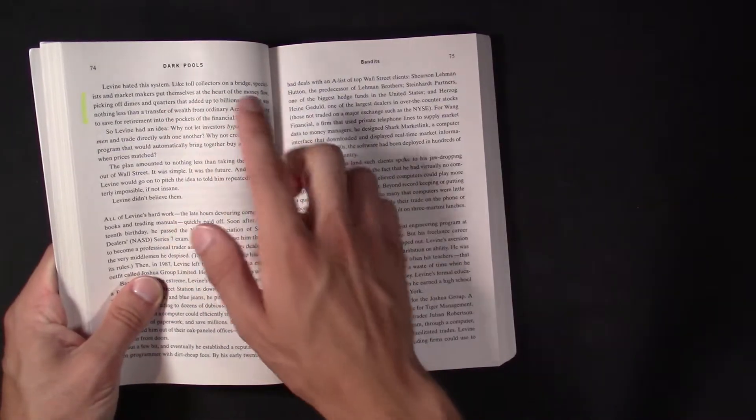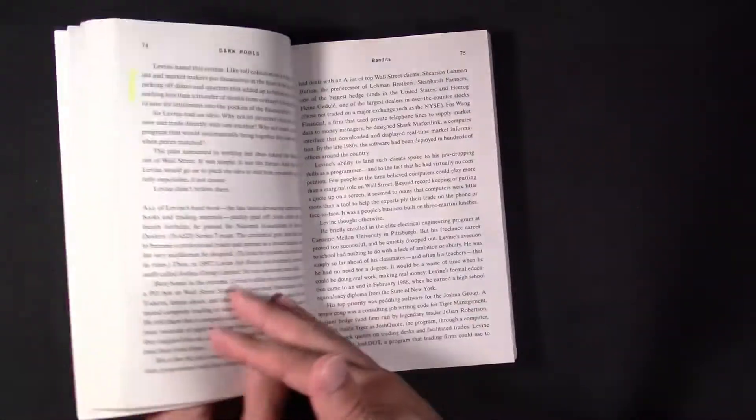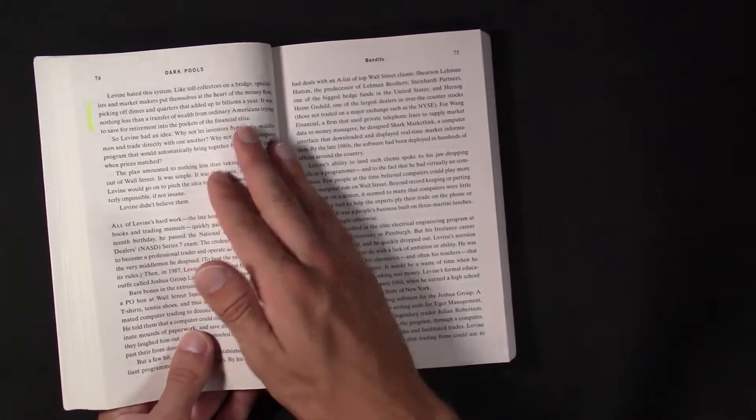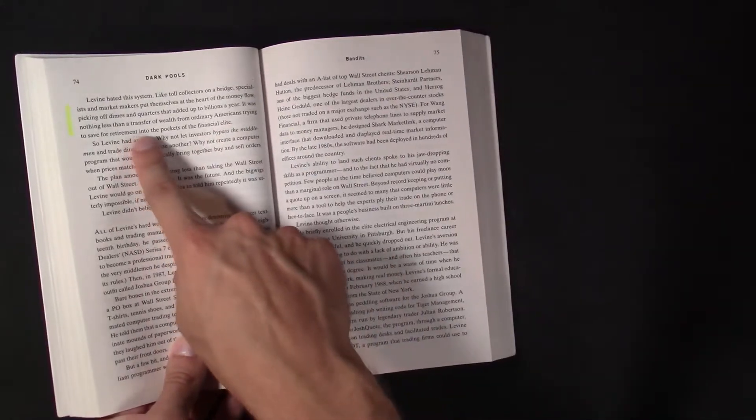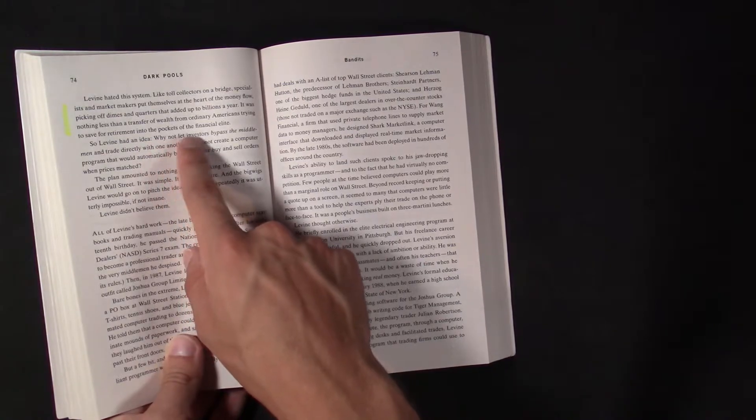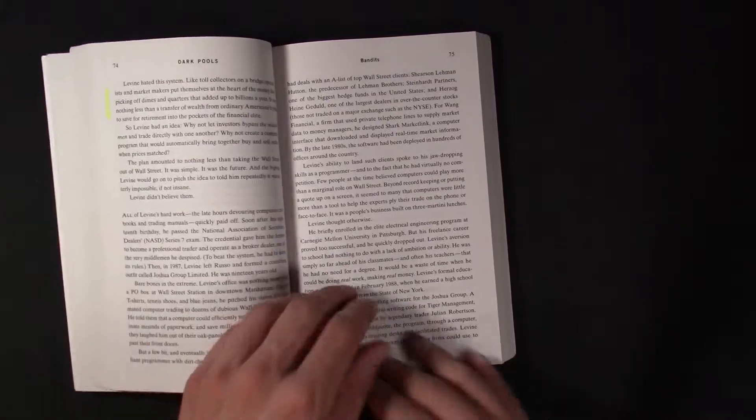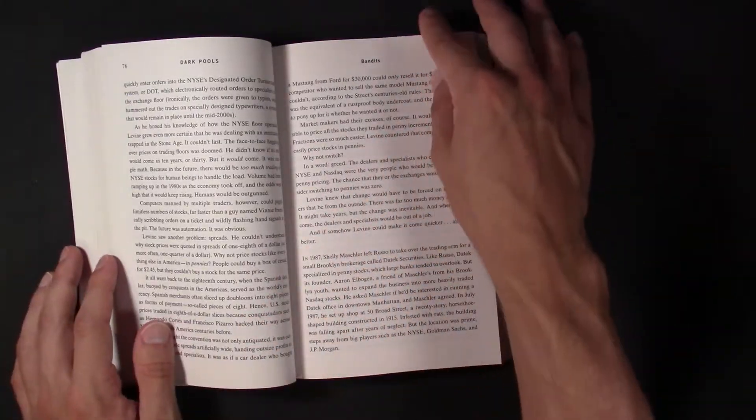Another example of one of the people who Scott Patterson interviewed, he basically said that it was nothing less than a transfer of wealth from ordinary Americans trying to save for retirement into the pockets of the financial elite. Because you're just taking pennies over dollars. But that adds up over time.